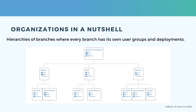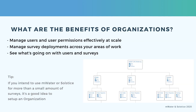So what are organizations? In a nutshell, they are hierarchies of branches in MWater or Solstice, where every branch has its own user groups and deployments. Here's an example that we will look at in a bit more detail soon.